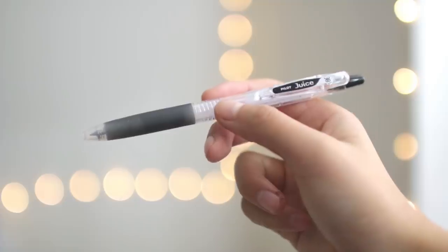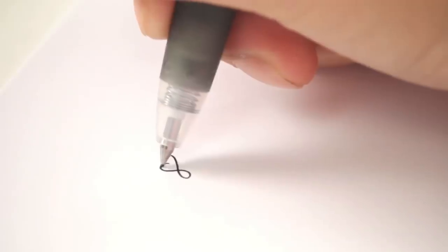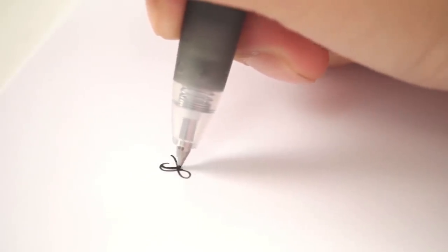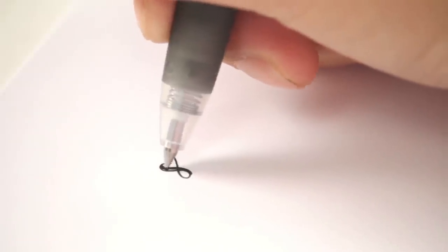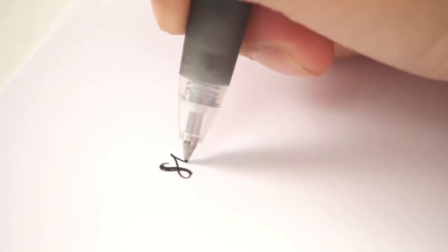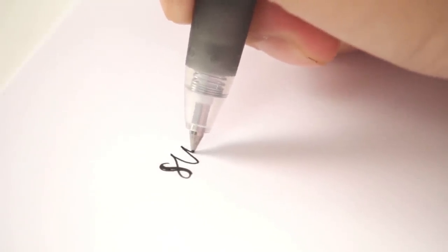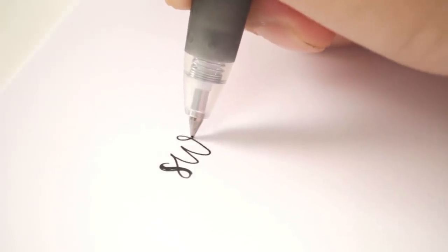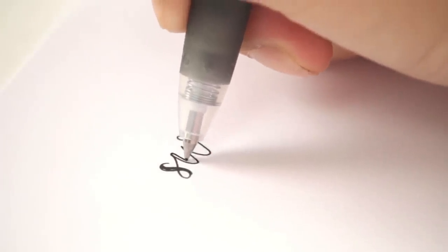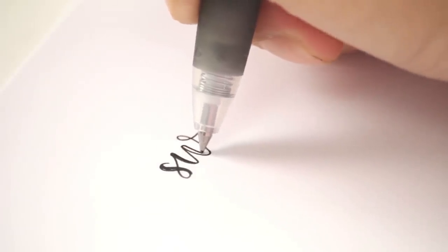Lastly, for pens, you'll need to use faux calligraphy to get the effect. First, write the letter normally in cursive, and then draw on thicker downstrokes. If you'd like a guide to where exactly to put the downstrokes, I will have a video and printable linked in the cards and description.